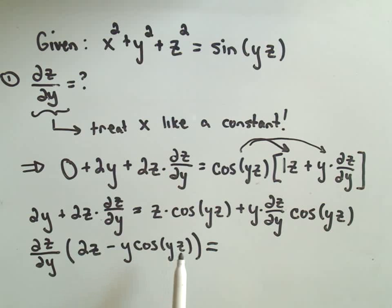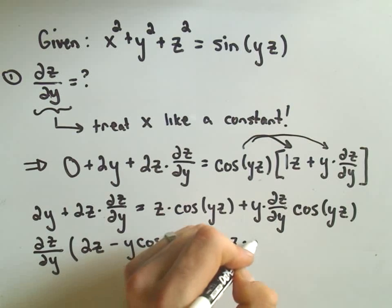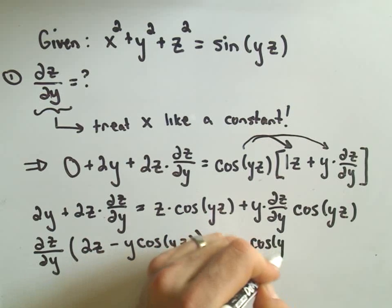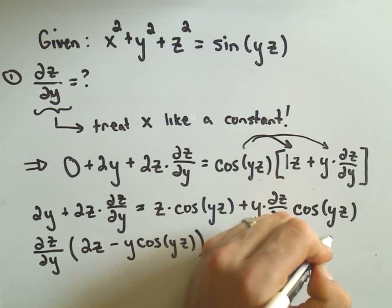And now we'll put everything that didn't have a partial derivative attached to it on the right side. So we've got z times cosine of yz, that was already on the right hand side. And this 2y that's chilling out on the left, we'll simply subtract it over.